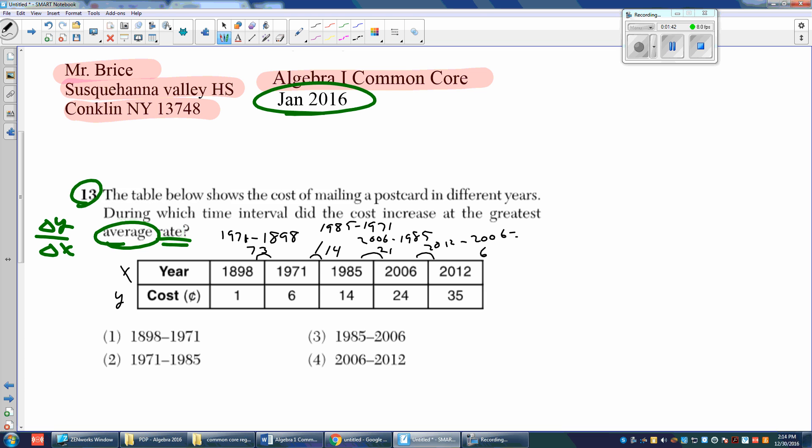Our delta Xs are 73, 14, 21, and 6. Now we're going to look for, or sorry, those are our delta Xs. Our delta Ys, I did the right minus the left, so it's 6 minus 1 is 5, 14 minus 6 is 8, 24 minus 14 is 10, 35 minus 24 is 11.